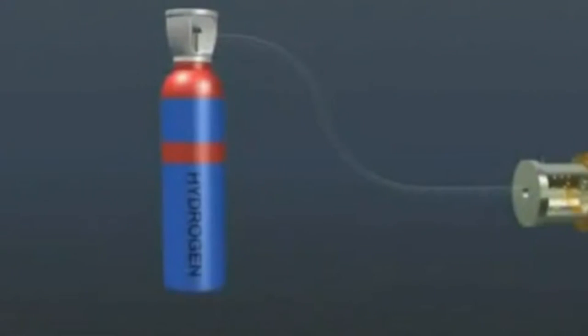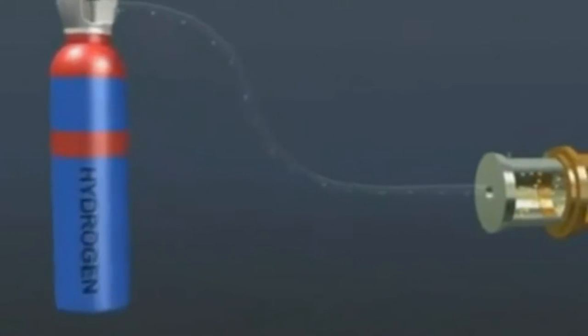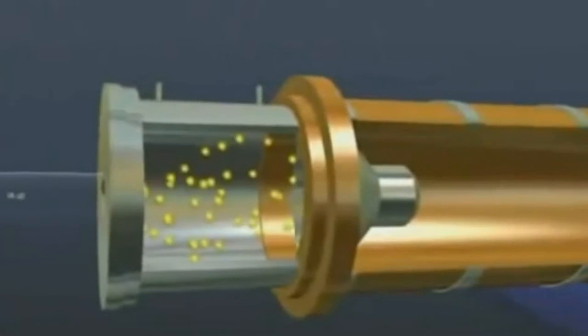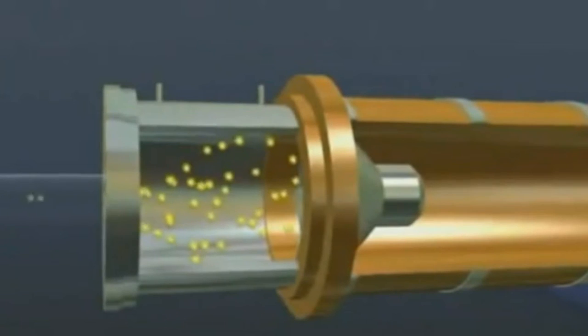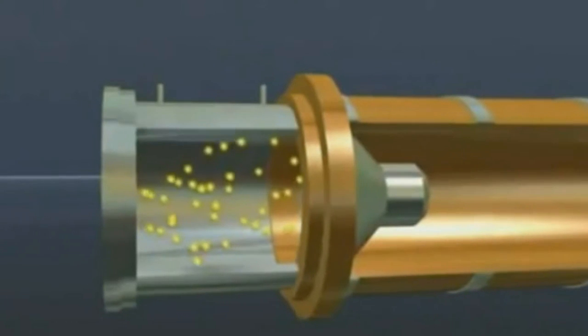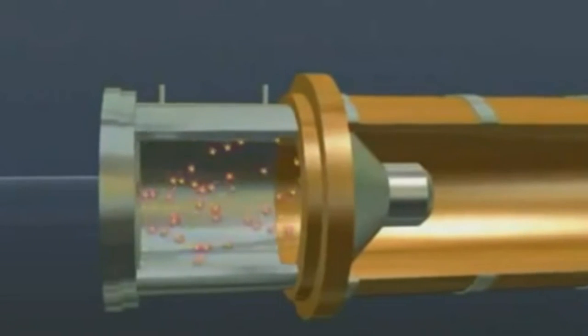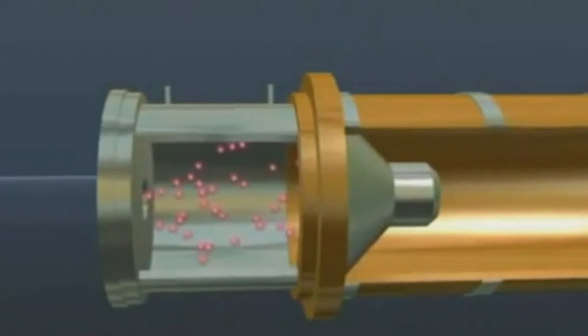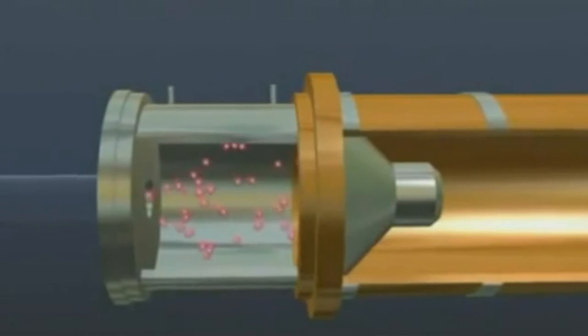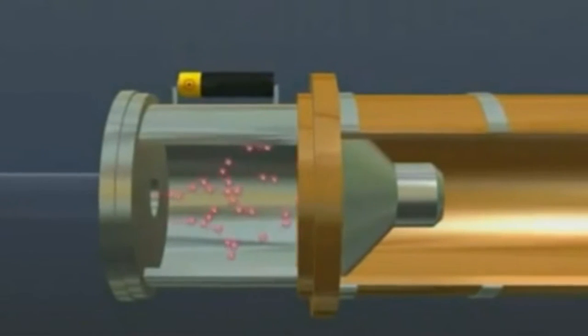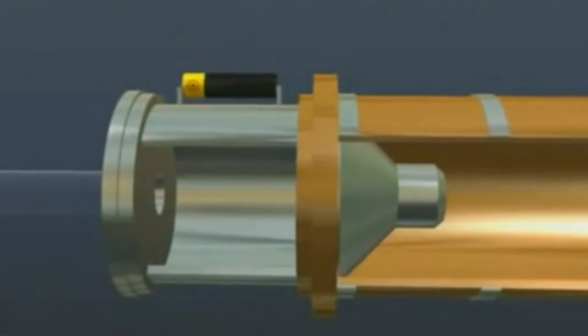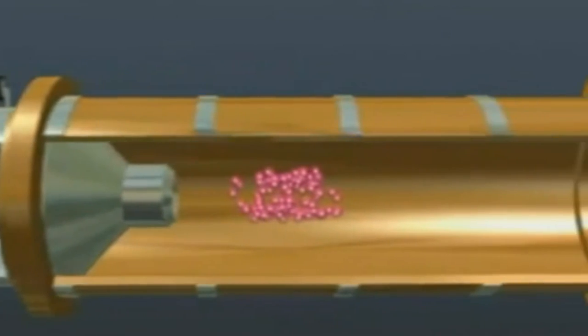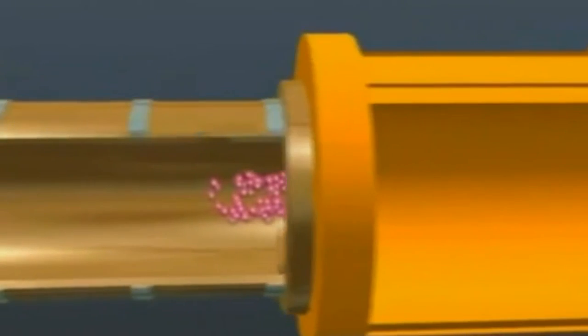Hydrogen atoms from this gas cylinder are fed at a precisely controlled rate into the source chamber of a linear accelerator, CERN's LINAC 2, where their electrons are stripped off to leave hydrogen nuclei. These are protons and have a positive charge, enabling them to be accelerated by an electric field. Their journey to eventually take part in ultra-high energy collisions, similar to those following the Big Bang, can now begin.